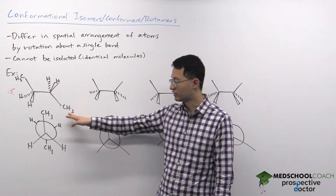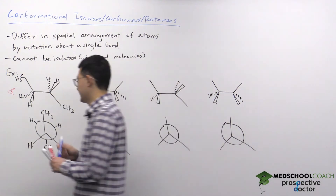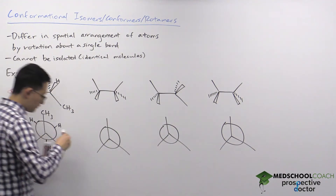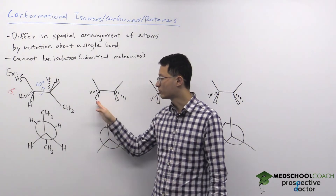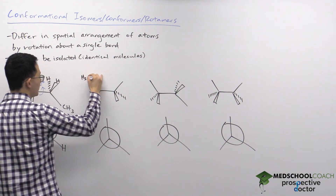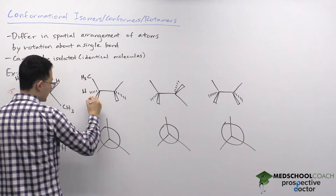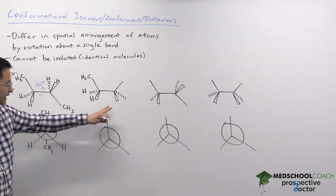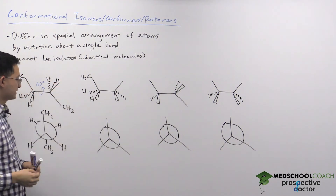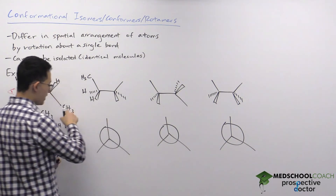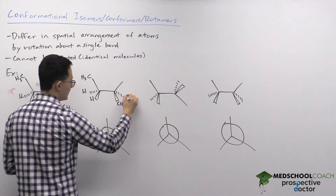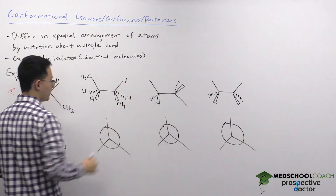To look at a conformational isomer we need to do a rotation about this bond — we'll do a 60-degree rotation. We hold the front atom in place, so the methyl group stays facing up and the hydrogens remain at the bottom left and bottom right. Then we rotate the back atom 60 degrees, so the methyl group moves into the plane of the page coming out toward the viewer, and the hydrogens occupy the remaining spots.